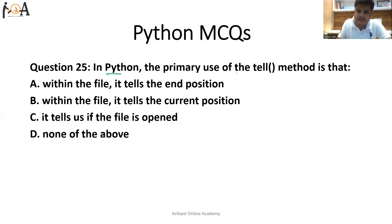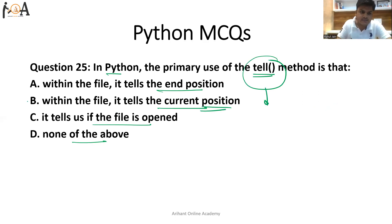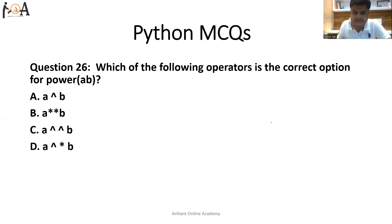Question 25: the primary use of the tell() method is — option A: it tells the end position within the file; option B: it tells the current position within the file; option C: it tells us if the file is open; or option D: none of the above. The tell() method is used in Python for finding out the current position within a file. That is why option B is the correct answer.